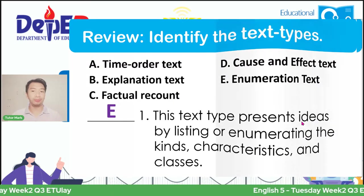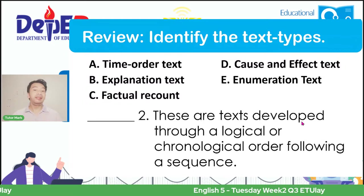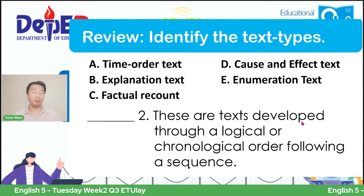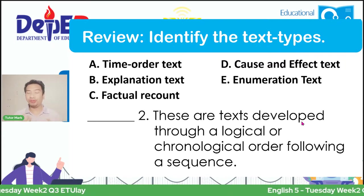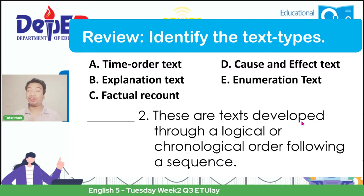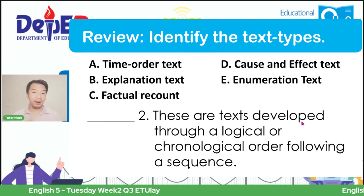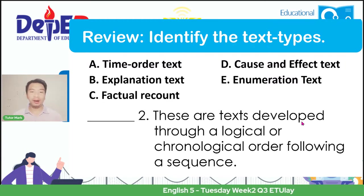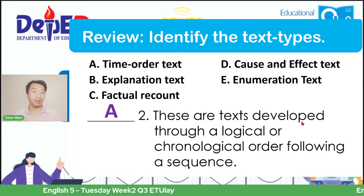Let's move on to number two: these are texts developed through a logical or chronological order following a sequence. What do you think is the name of this kind of text type? It is arranged in a chronological order following a sequence. If your answer is letter A, time order text, then you are correct.